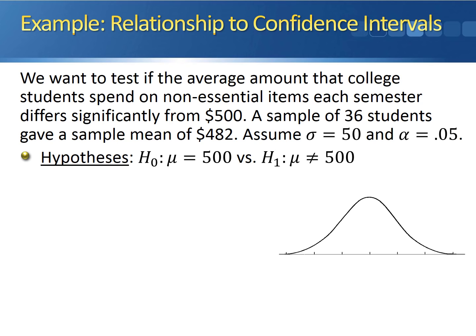Rather than running through the test, since we have a two-sided alternative, we can construct a confidence interval. A 5% level of significance for the hypothesis test corresponds to 95% confidence.